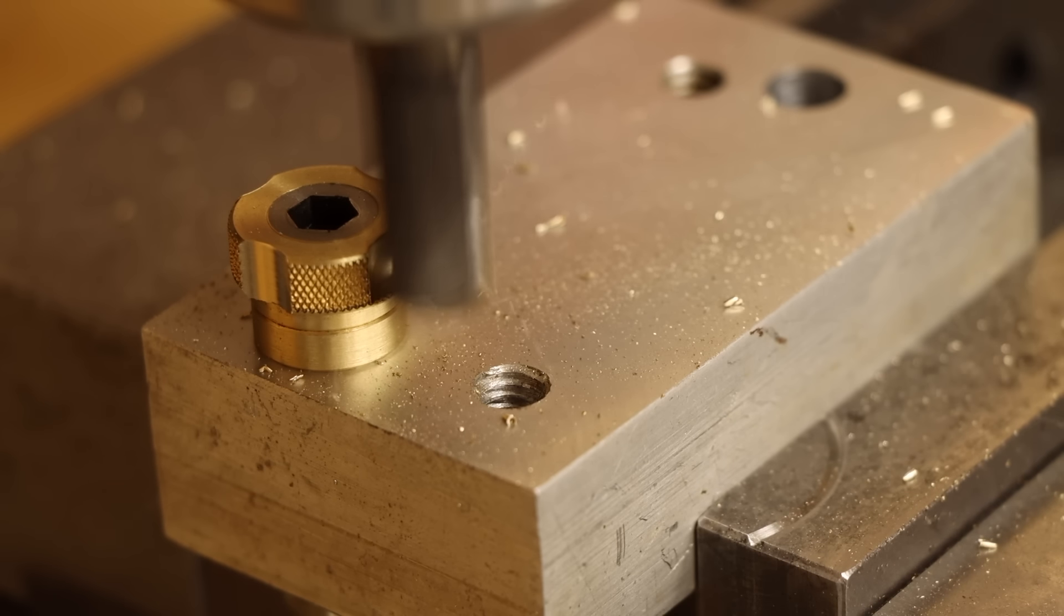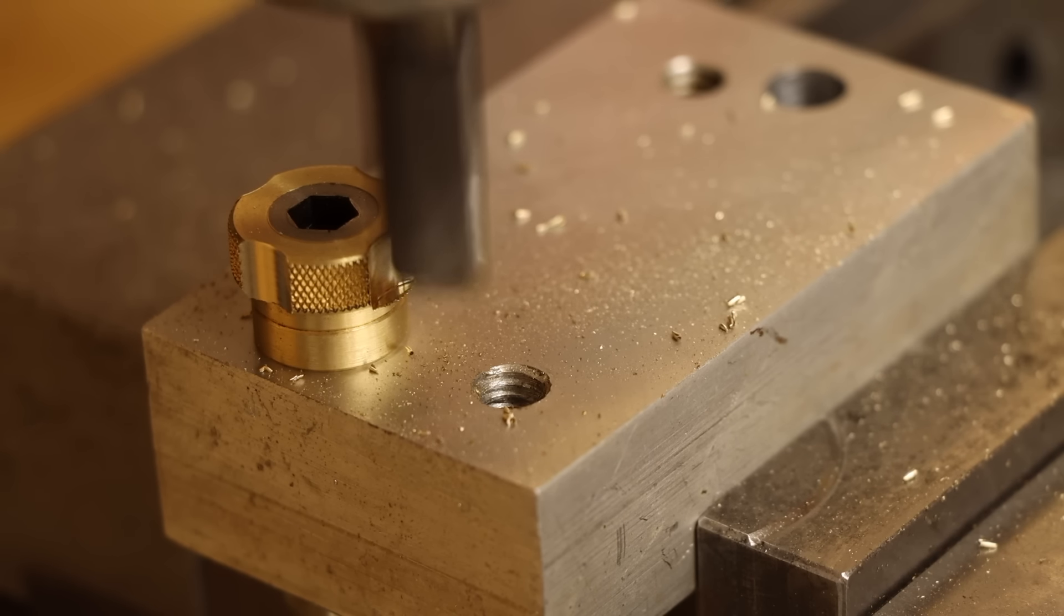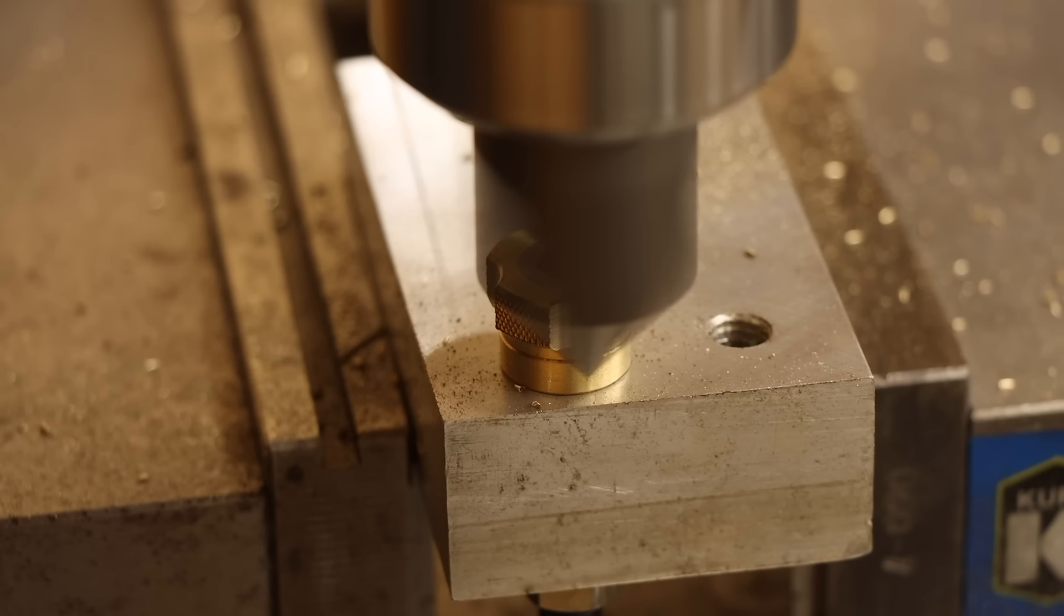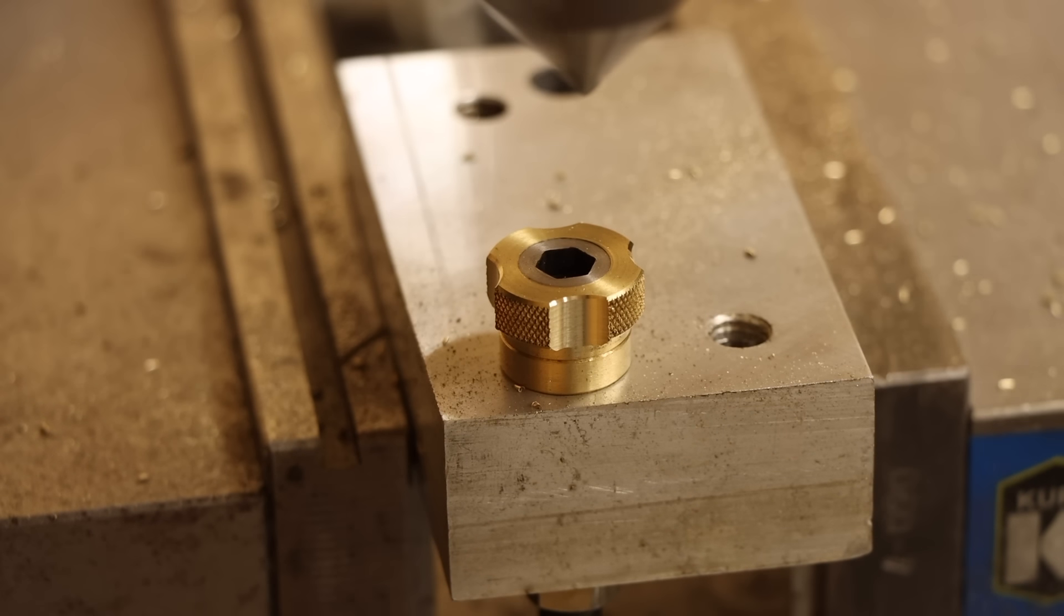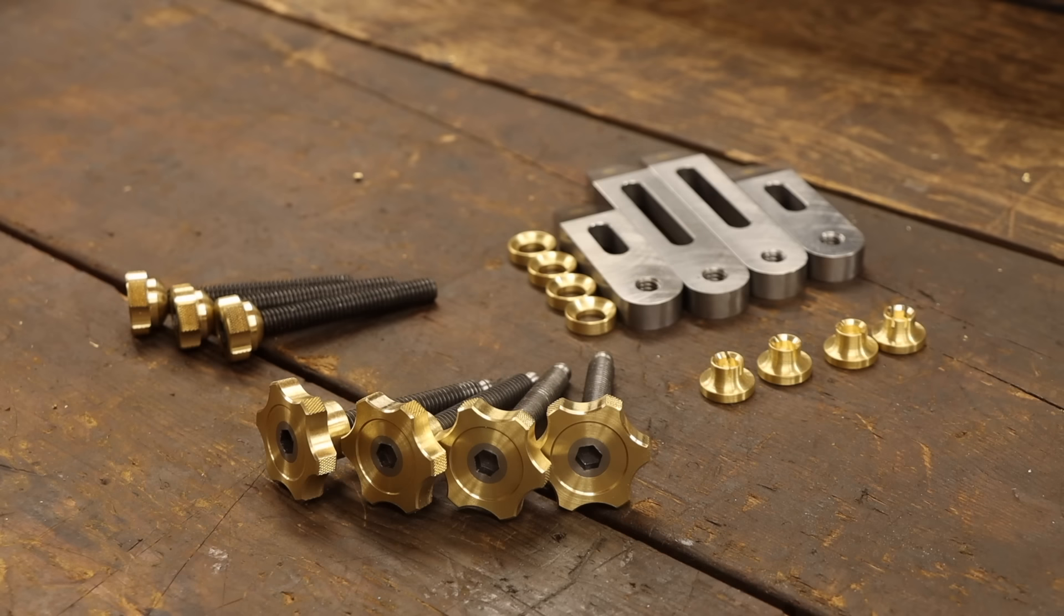The pivot screw knobs go much the same, only this time a four scallop pattern. And of course, chamfers on these as well. Now, all the bars, knobs, screws, washers, and feet are ready to go.